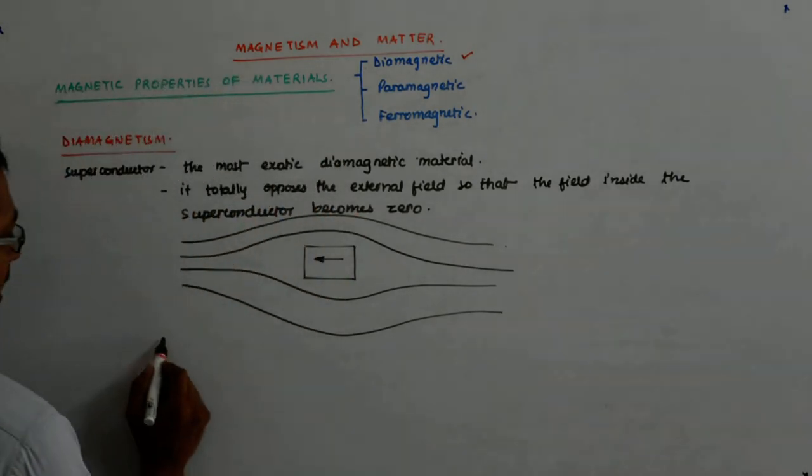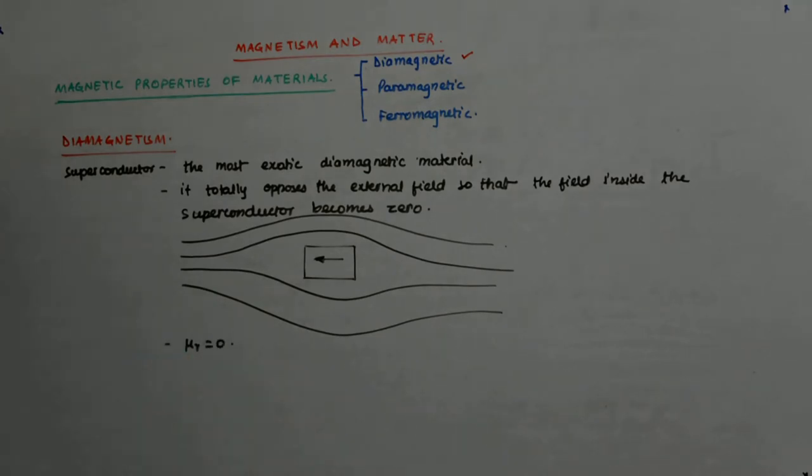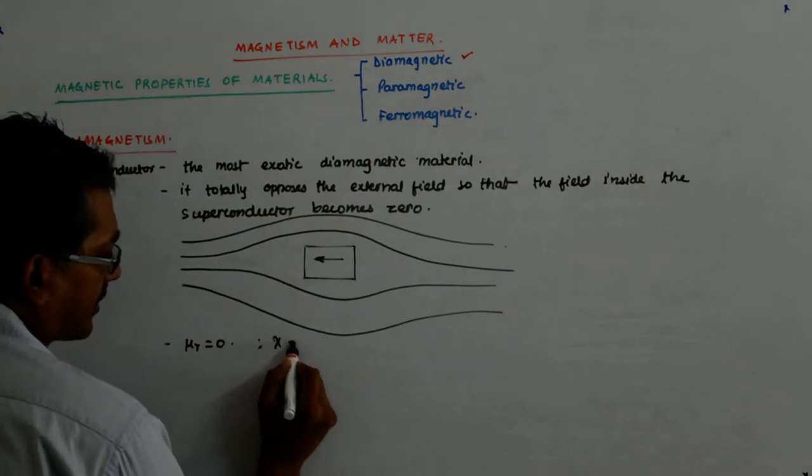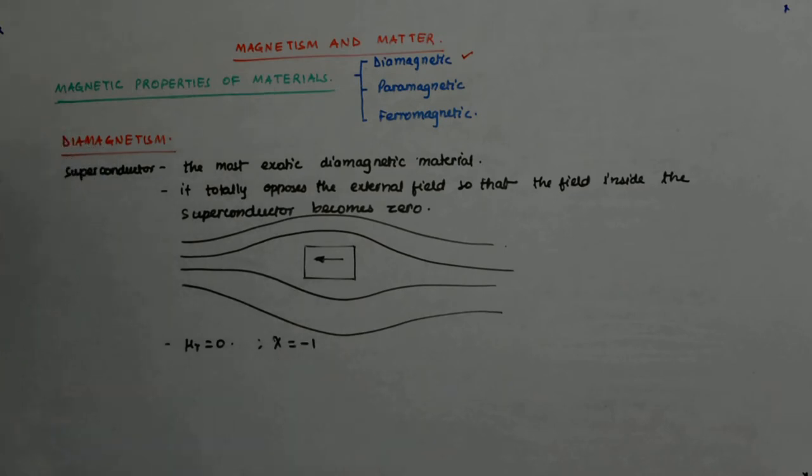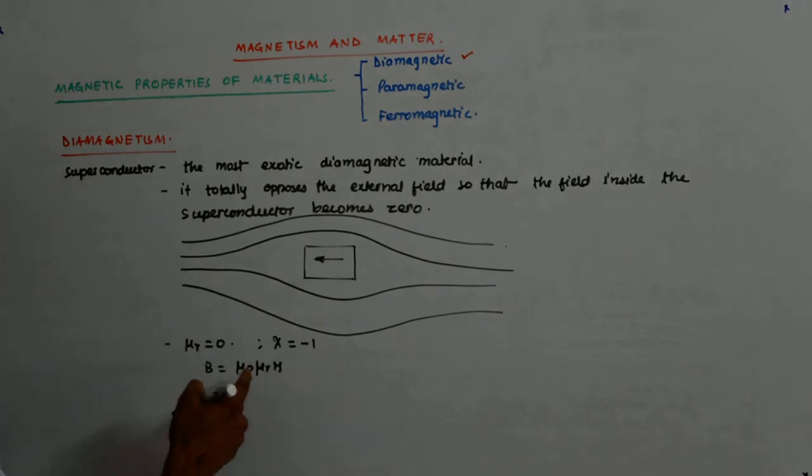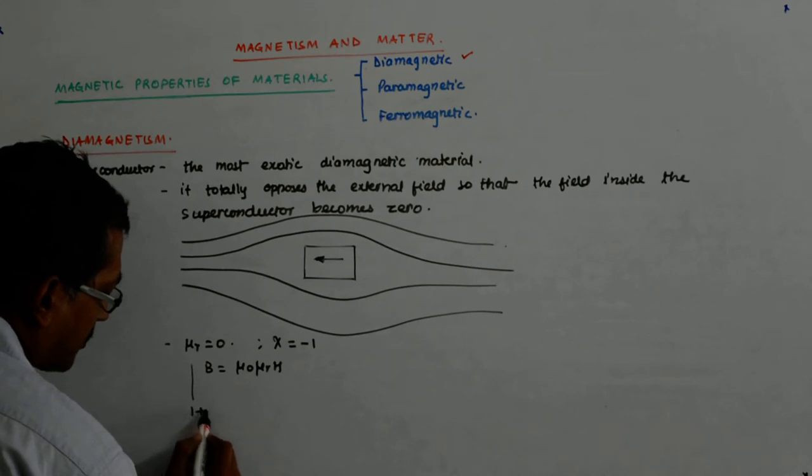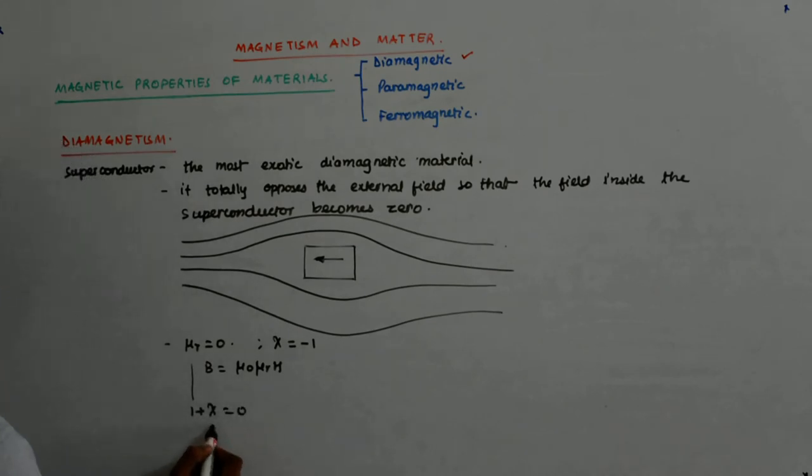So what does it mean? It means that your mu r is equal to zero. Is it not? What will be mu r for a superconductor? Minus one. So what is your chi? Chi will be minus one. Mu r is zero because B is equal to mu naught mu r H. H is not zero, mu naught is not zero. So mu r will have to be zero. And since mu r is equal to one plus chi, so one plus chi is zero and hence chi is equal to minus one.